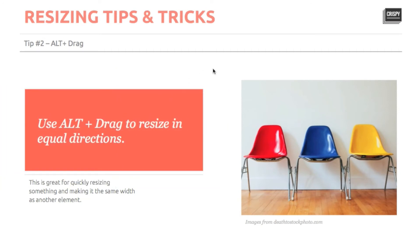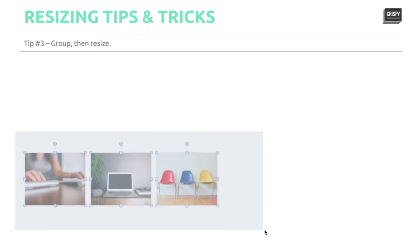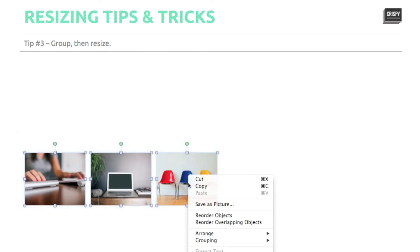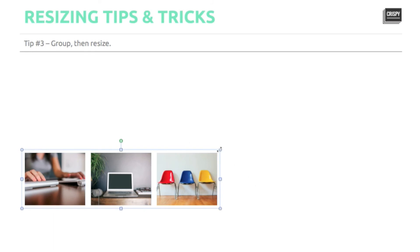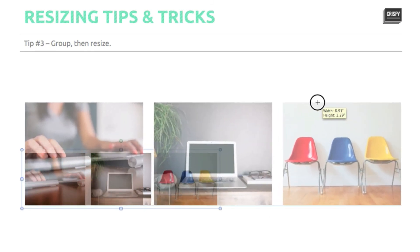And finally, tip number three: let's say you've got a group of images that are shaped just the way you like them already, but you need to resize them all to fill a slide and you don't want to mess up the way that they look. First, select all of the objects, right click and select grouping, group, then use the shift plus drag technique and resize, and voila!